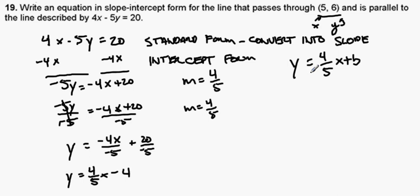So, substituting those values in for the variables, we wind up here with 6 equals 4 fifths times 5 plus b.